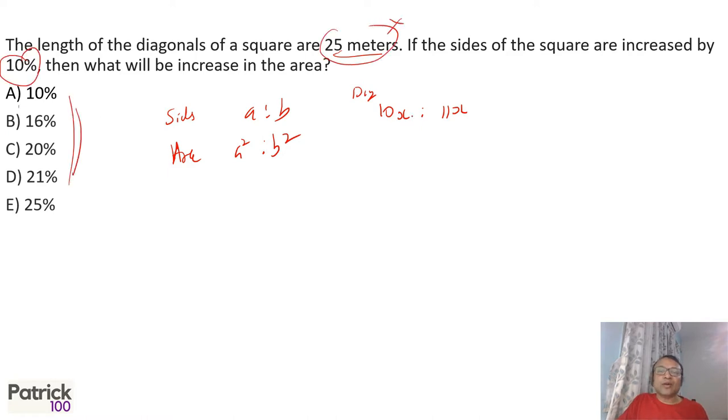You can ignore this value. You can directly solve 10x to 11x. So area will be 100 is to 121, which means an increase of 21%, B option.